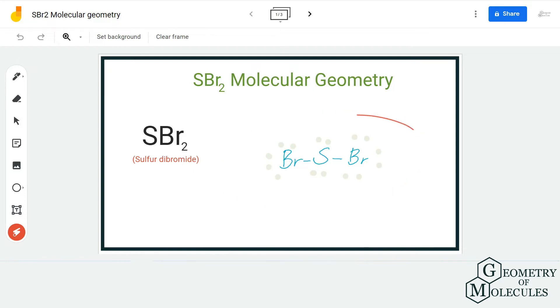This is the Lewis structure of SBr2, in which the sulfur atom is forming two bonds with two bromine atoms. At first glance, this molecule might seem linear because of the arrangement of the atoms.